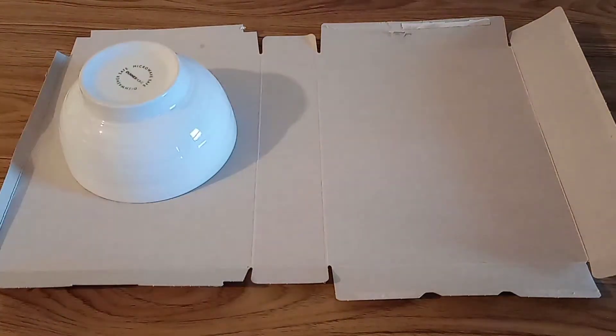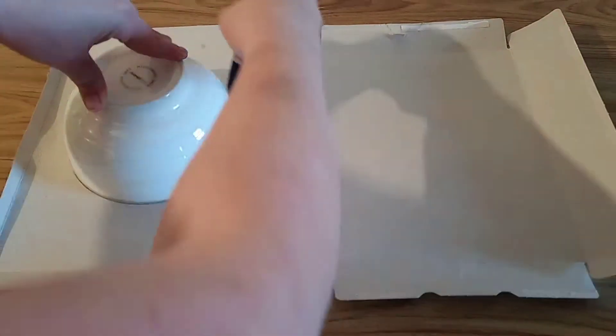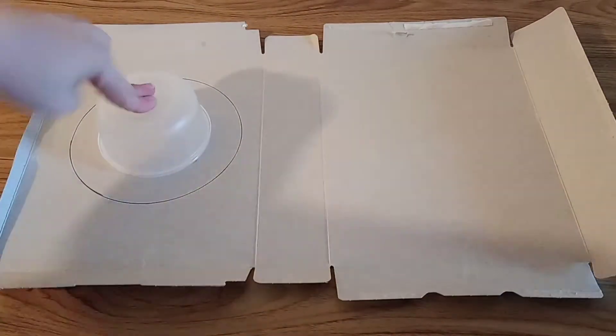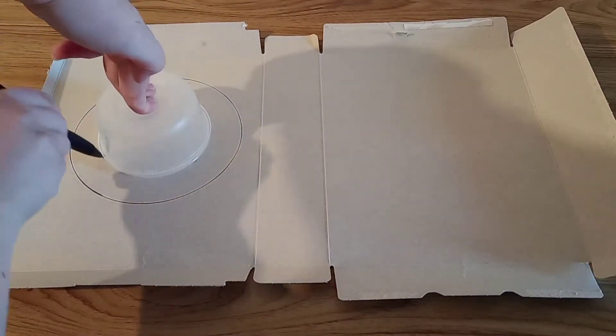The first thing you're going to want to do is make a circle within a circle on some cardboard. For this I've used a cereal bowl for the outside circle and then a little plastic container I have on hand for the inside circle.